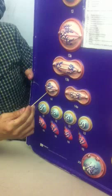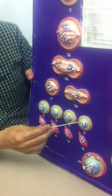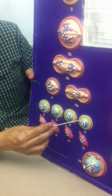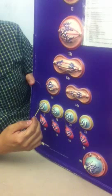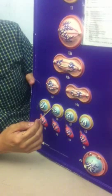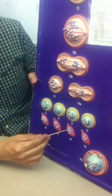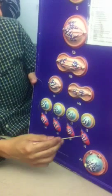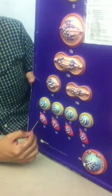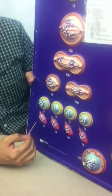Then you have spermatids. These will divide into spermatids, and then finally the spermatids will mature in a maturation process called spermiogenesis into these final structures called spermatozoa.